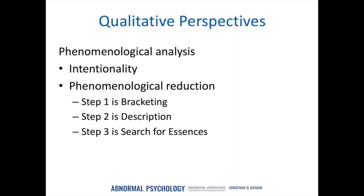The phenomenological reduction involves three steps. The first step is called bracketing. Bracketing involves the researcher laying aside taken-for-granted beliefs about the world and what's being studied. There is an effort to shift one's view from understandings that mirror the world to the view that objects present themselves to us and we have to interpretively make sense of them.